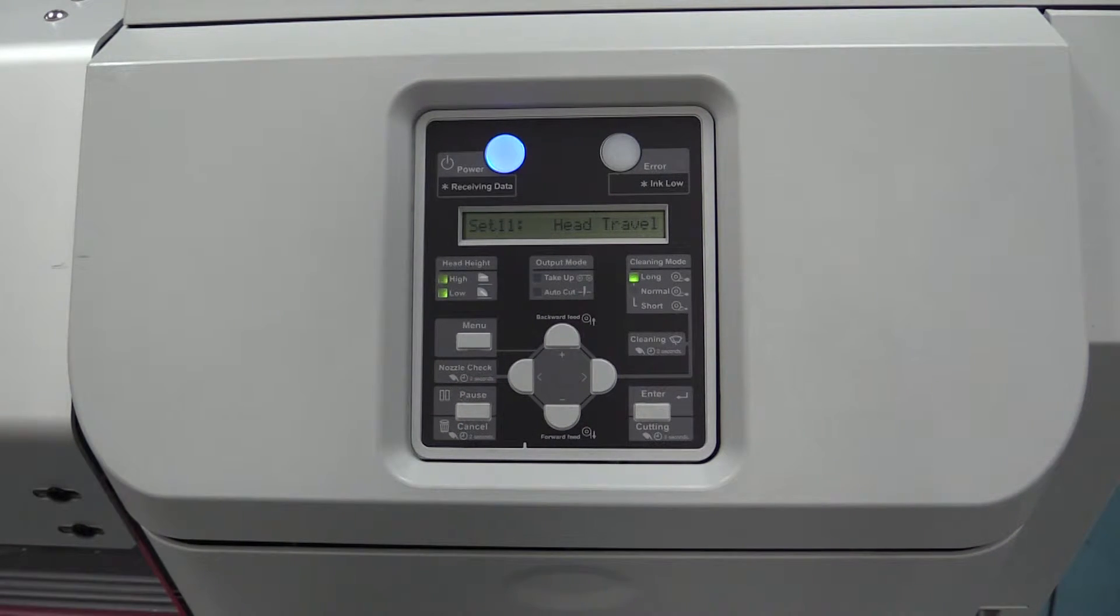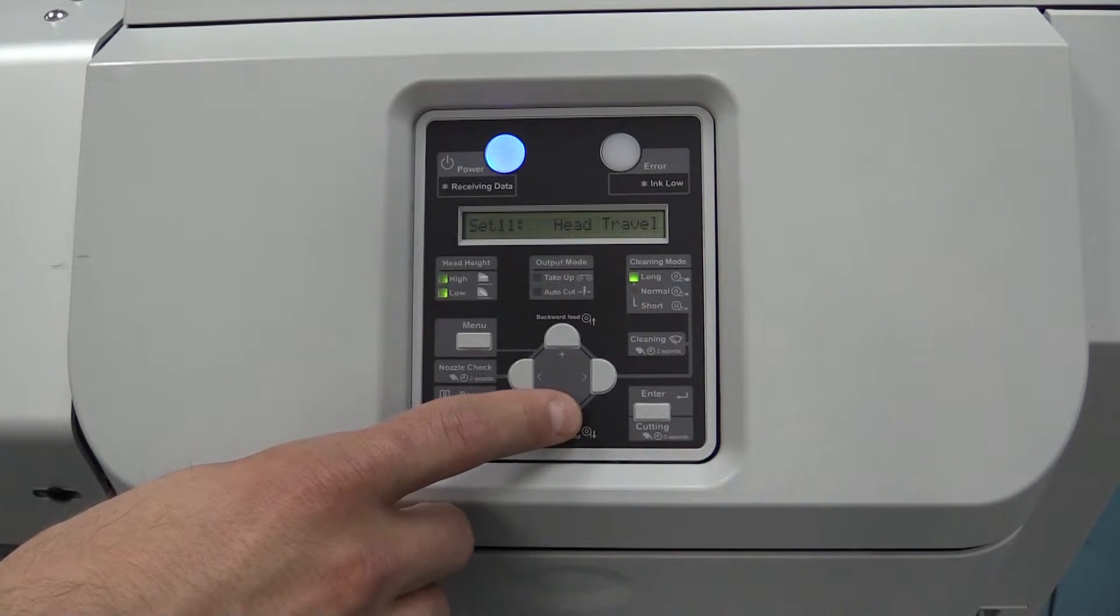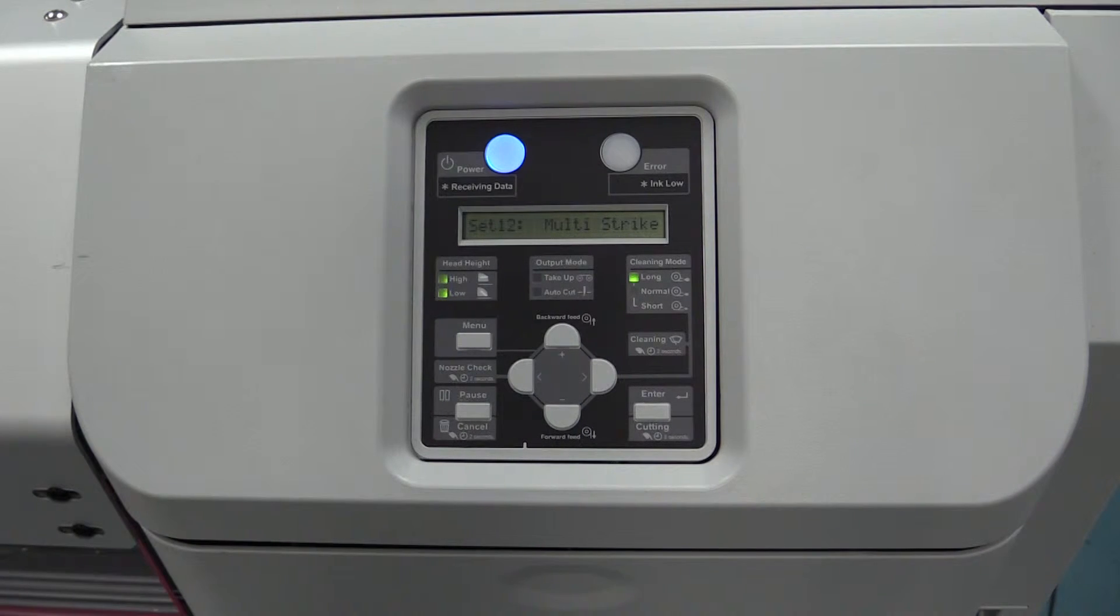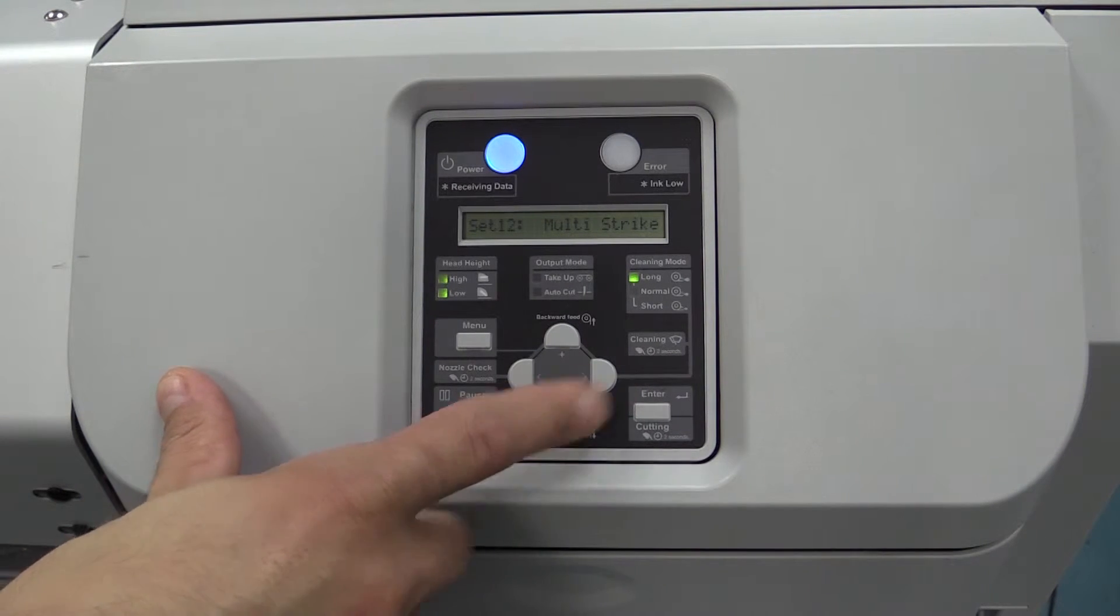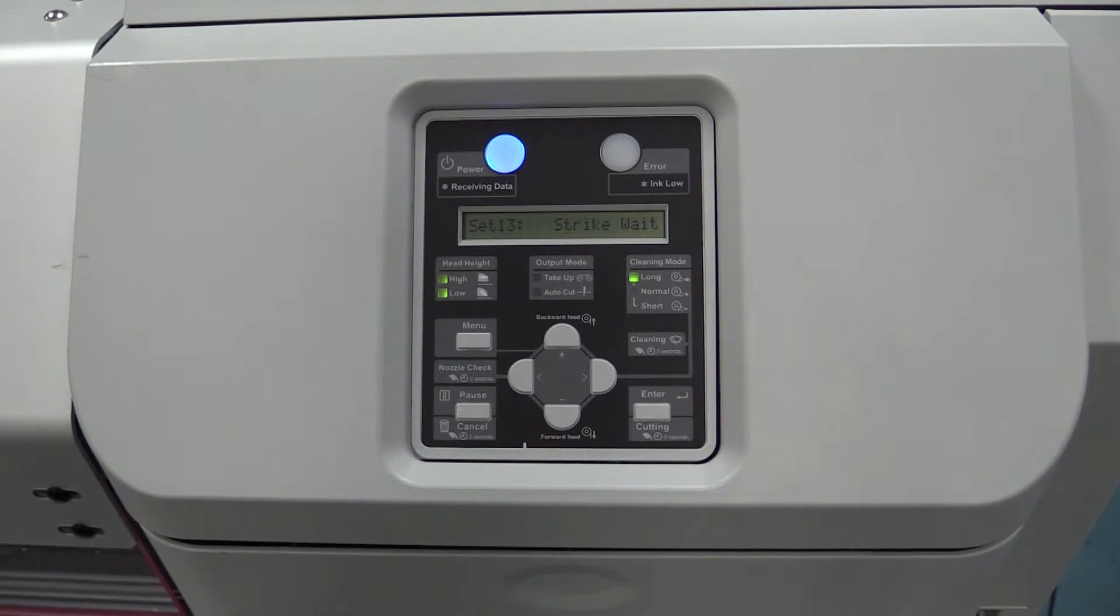Setting 11 is head travel, which is controlled by the presets in the RIP software, so you don't worry about messing with anything in the submenu. Same with setting 12, multi-strike. This tells you how many passes you want it to do to print your color, anywhere from one to nine, but this is all controlled by the presets. Same with strike weight, which is between print passes. Do you want it to pause and give you a one-second stop between print passes if you need to add additional drying time?